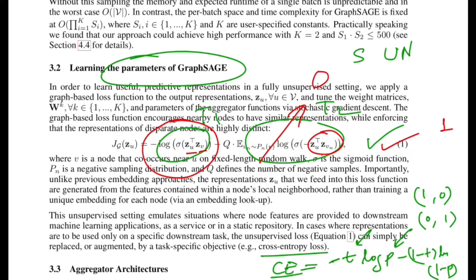The q term defines the total number of negative samples to consider when calculating this loss, and it also gives weightage to the t2 term. You calculate the loss for node z_u in graph G, take the partial derivative with respect to the weight parameters W at every depth, and if the aggregator function is also parameterized, that gets tuned as well. You can also have an extra parameter W multiplied to the k-1 representation of the node as an additional transformation — so you end up training these three parameters.